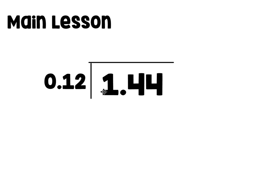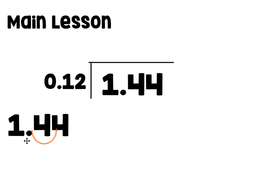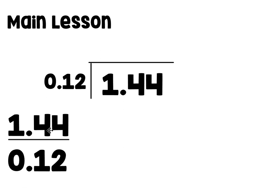Let's look at another example. Here we have 1 and 44 hundredths divided by 12 hundredths. My first step is to write it as a fraction: 1 and 44 hundredths divided by 12 hundredths. In this example our decimal is in the hundredths place. If I were to just multiply by 10 to remove it, it wouldn't be enough — we would still have the decimal 1 and 4 tenths. Because it's in the hundredths place, I need to multiply by 100. When I multiply by 100 it moves two places — for every multiple of 10 it moves one place, so times 100 moves it twice. When I multiply 1 and 44 hundredths by 100 I get 144.